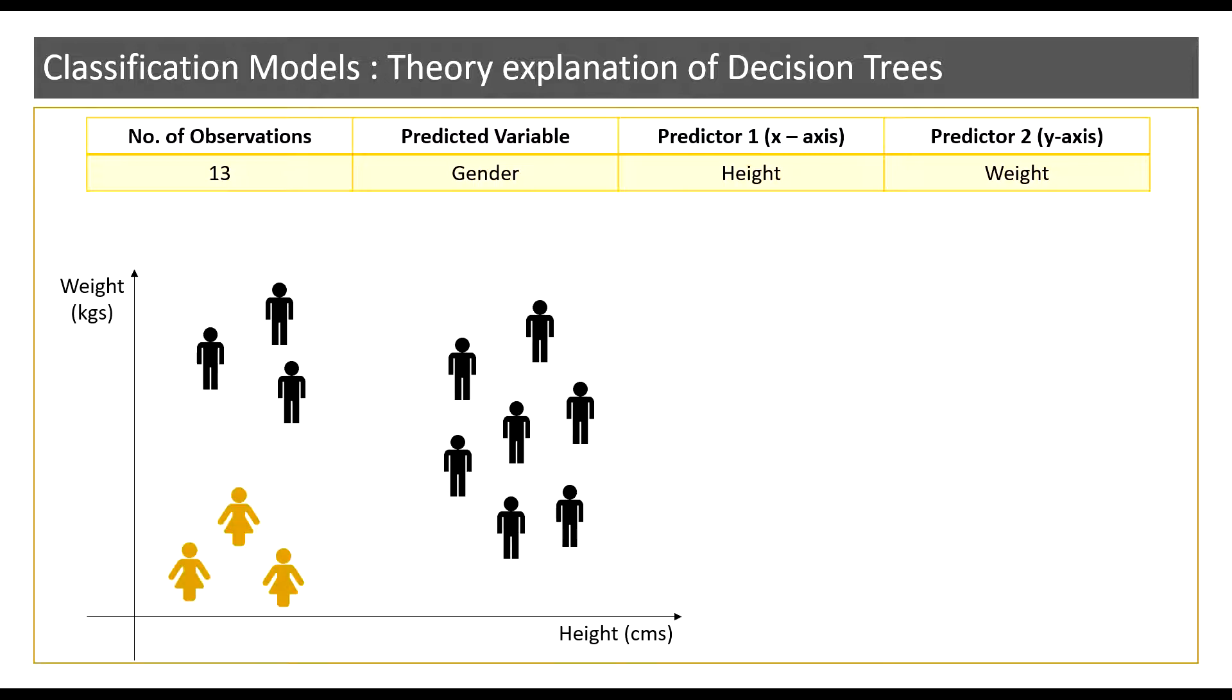I will now plot these 13 observations according to their gender across height and weight, height on the x-axis and weight on the y-axis. Now after having plotted these gender observations we will try and group these observations into homogeneous groups because that is the rationale behind decision tree models. So here on the graph we need to divide these observations into homogeneous groups. So how can we do that?